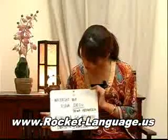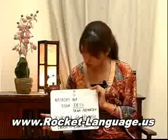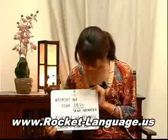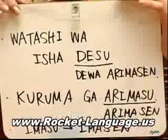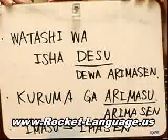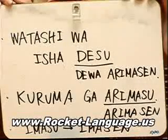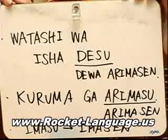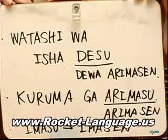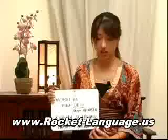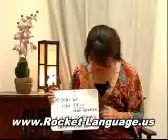Here's another example using there is / there are. Let's say it was kuruma ga arimasu, meaning there is a car. Now to say there isn't a car, you say kuruma ga arimasen. Very similar — you use arimasen both times.